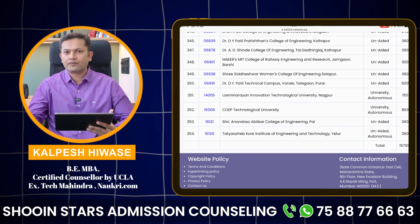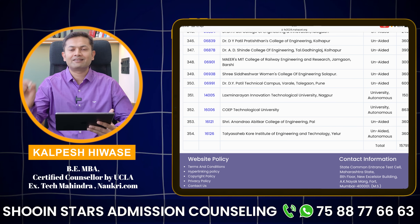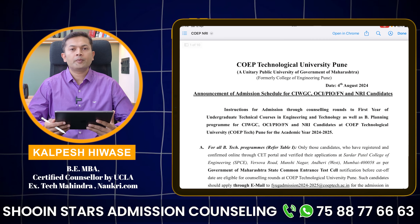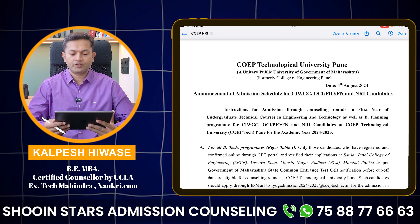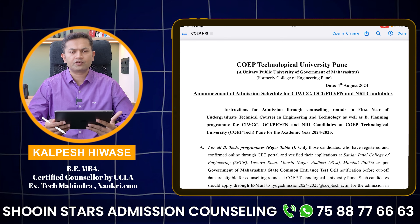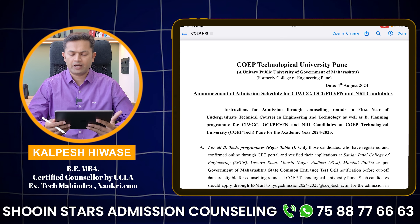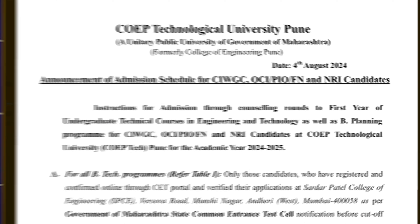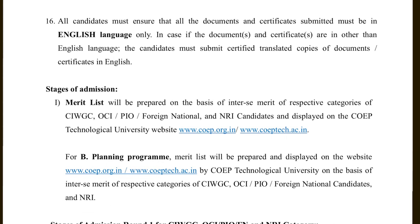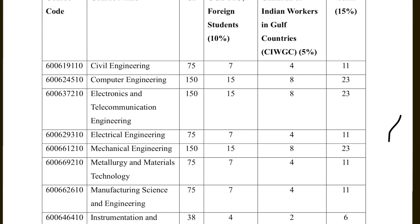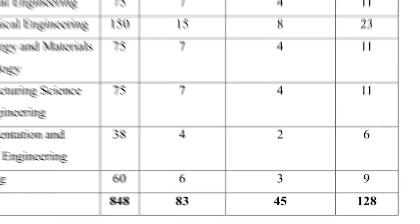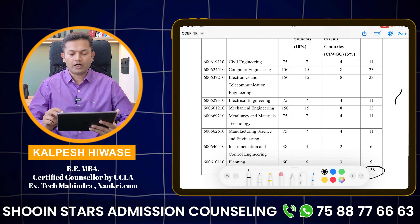I will tell you where the 15% additional seats are coming from. This document was released by COAP last year, talking about the admission process of CIWG, OCI, FN, PIO and NRI candidates. If you scroll down, you will find the intake of this particular admission process. The total number of seats in this admission process is 128.